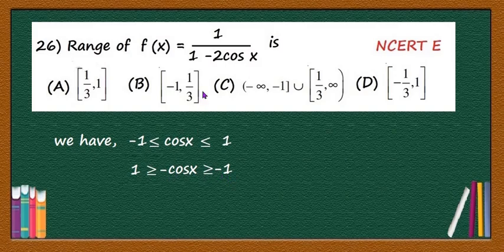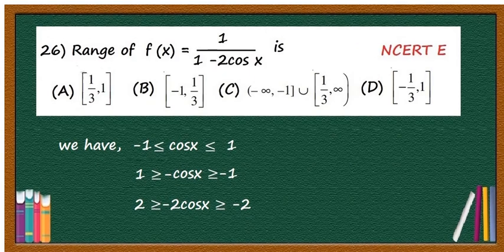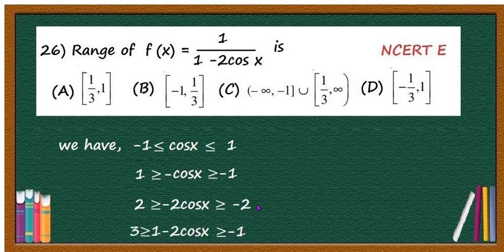Now multiplying by the constant 2, you will have 2 ≥ -2cos x ≥ -2. Adding 1 to this, you will have 3 ≥ 1 - 2cos x ≥ -1.